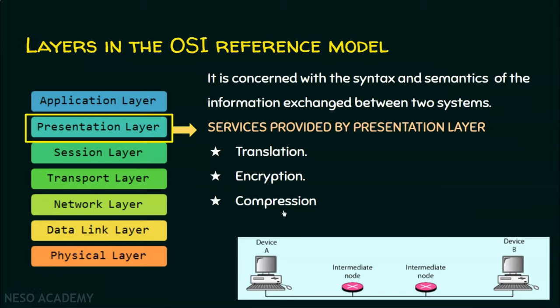The third service is compression. Compression is very important when sending multimedia messages — messages with audio, video, images, animations, text, etc. Compression means reducing the number of bits contained in the information. So the services offered by the presentation layer are translation, encryption, and compression.